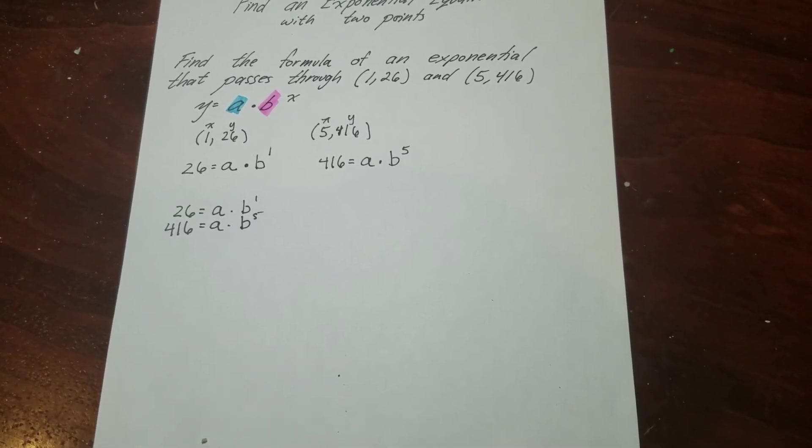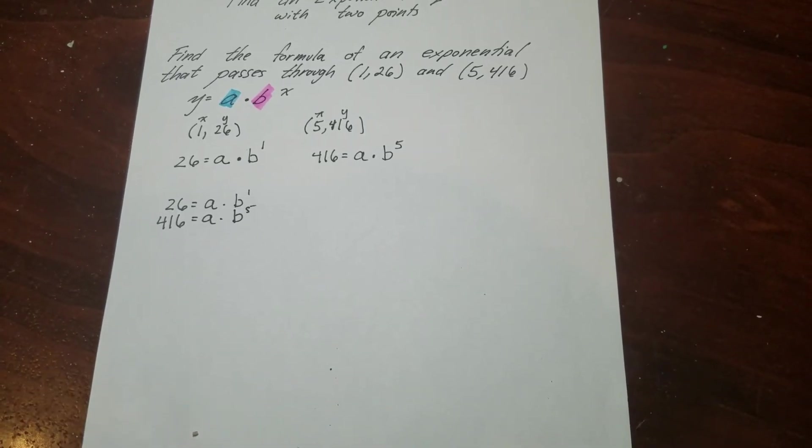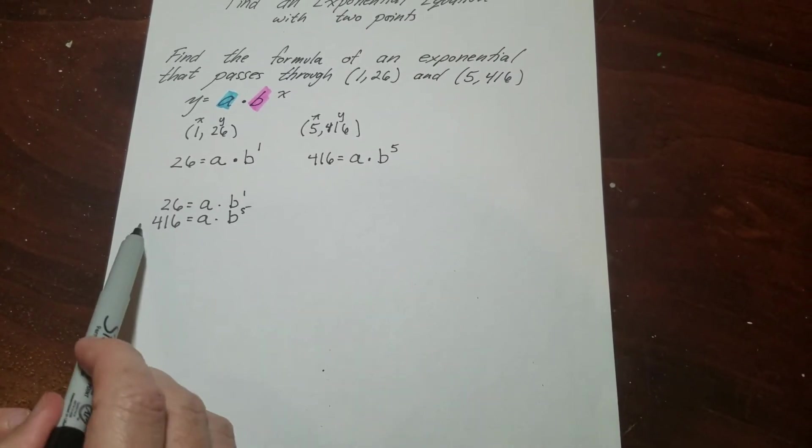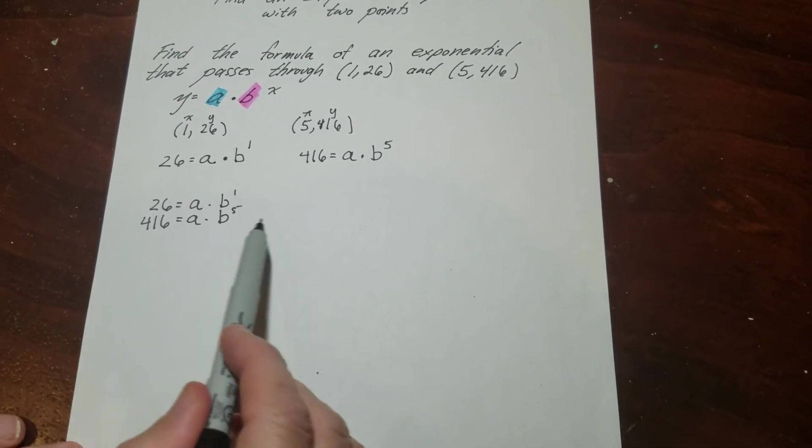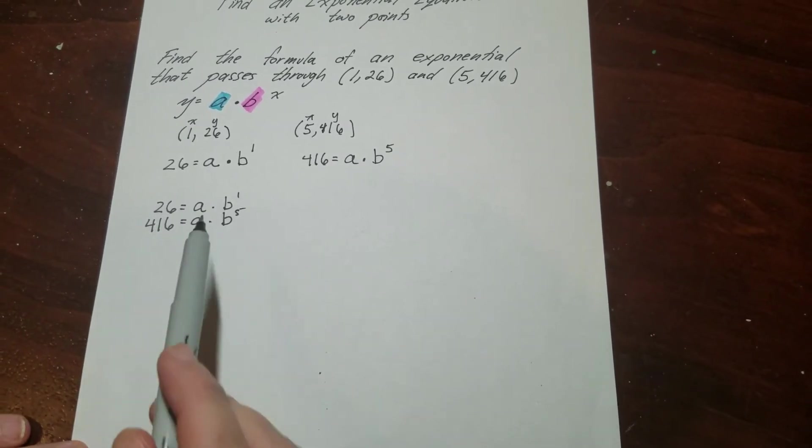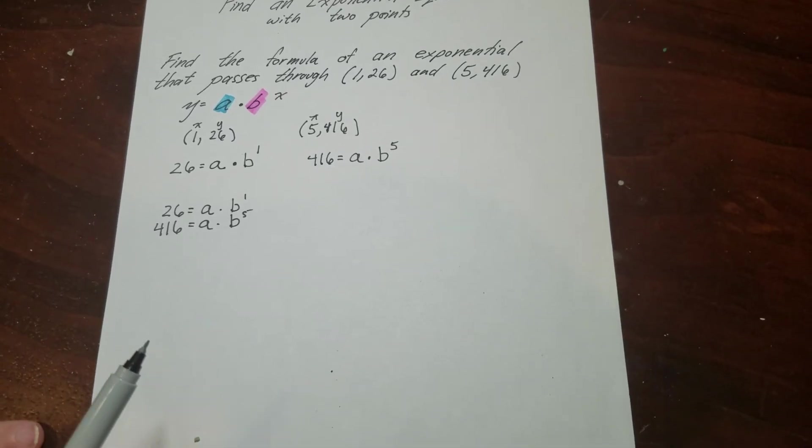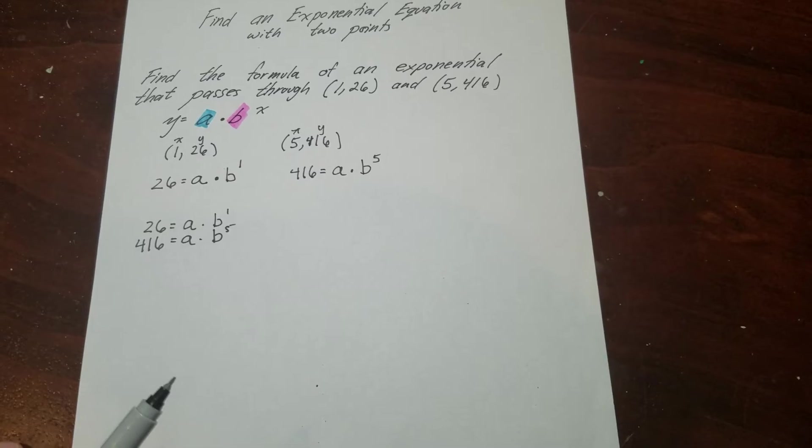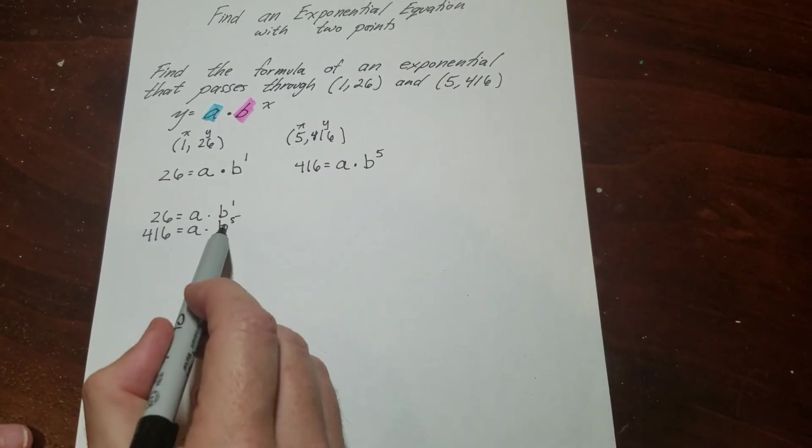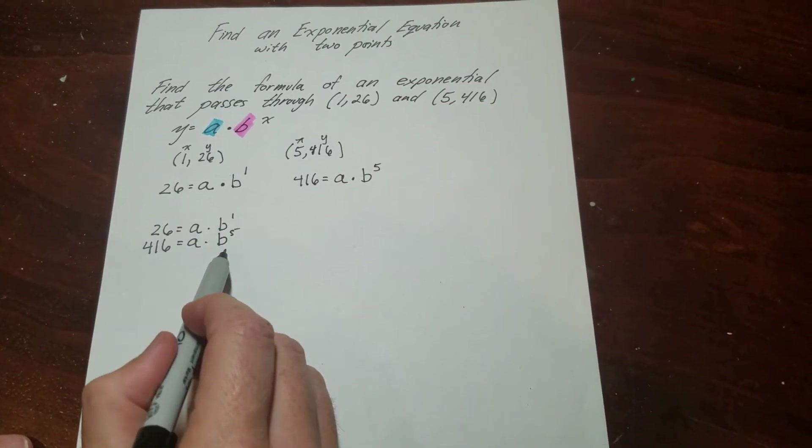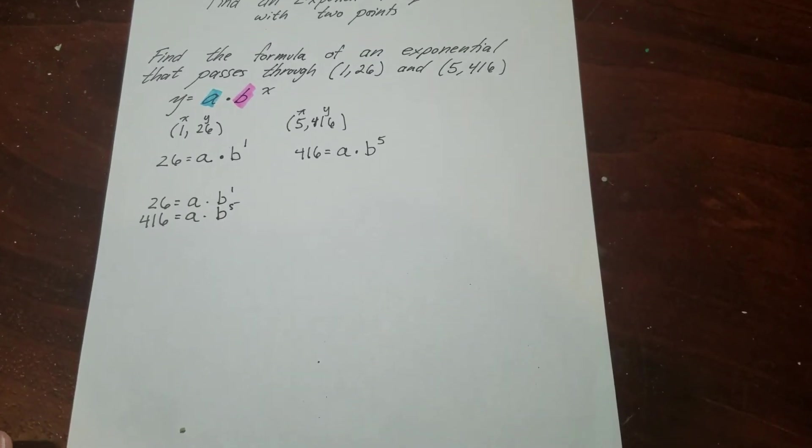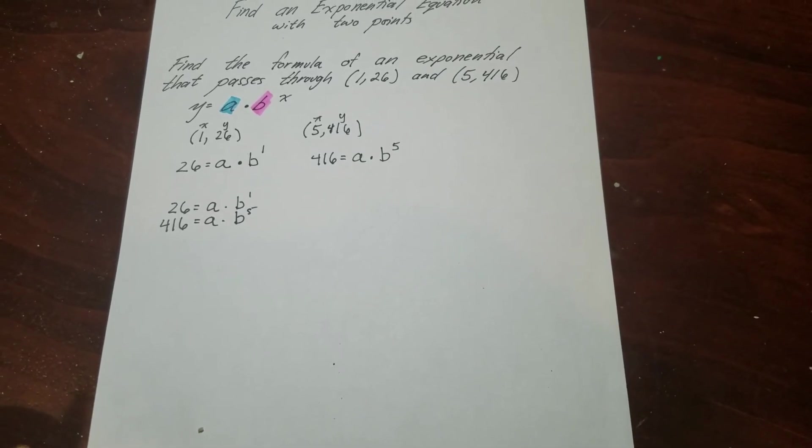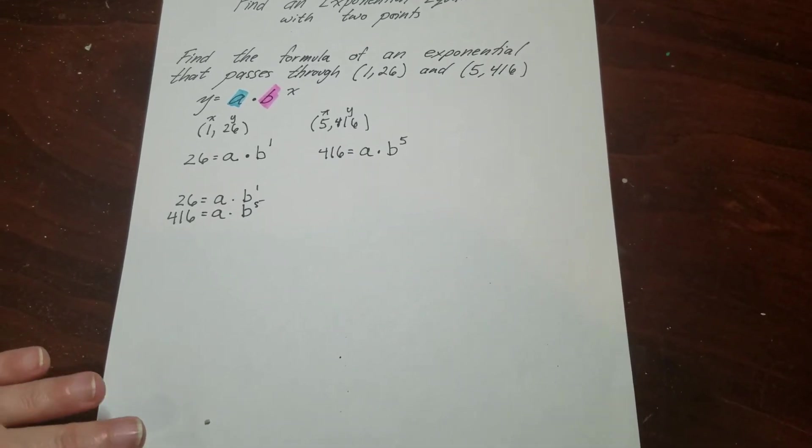Now, when you do a system of equations with lines, usually you try to use elimination. So in this particular case, someone might look at this and say, oh, I know what you do. You multiply everything by negative 1 and then the a's will cancel out. Well, you're right about the a's canceling out, but you're wrong in saying that we're going to multiply everything by a negative because we can't do that because of these two terms here. One is to the power of 1, one is to the power of 5. We can't subtract. But what we can do is divide.